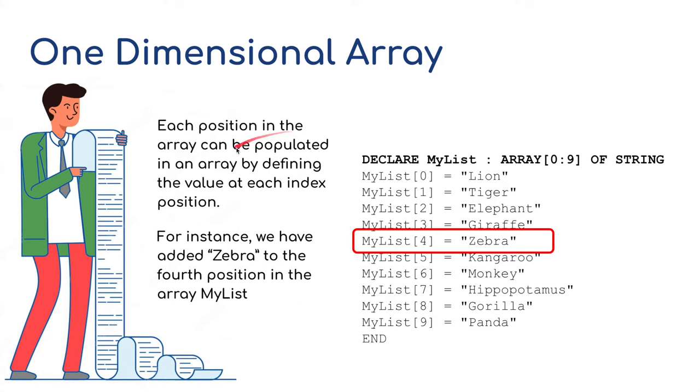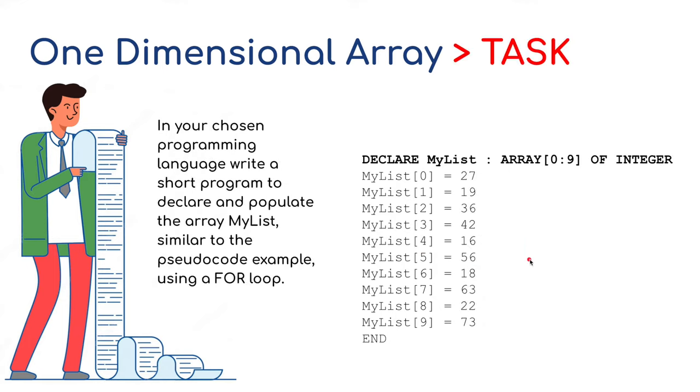Each position in the array can be populated by defining the value of each index position. For example, zebra has been added at list item, my list, at position 4. It's the fifth item because the first position is 0, but it's at position 4.